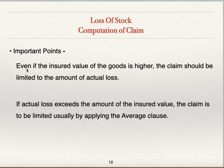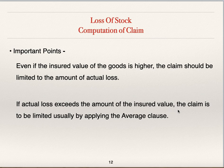Even if the insured value of goods is higher, the claim should be limited to the amount of actual loss. So if insurance is taken for 1 lakh 50,000 and actual loss is 1 lakh, the claim should be limited to actual loss which is 1 lakh. If the actual loss exceeds the amount of insured value — that is, loss is more and policy is less — the claim is limited by applying the average clause.